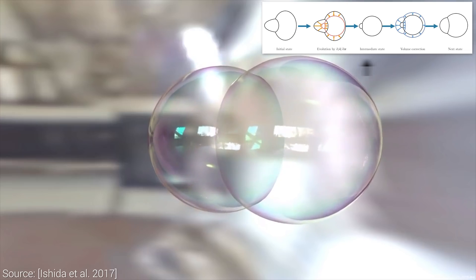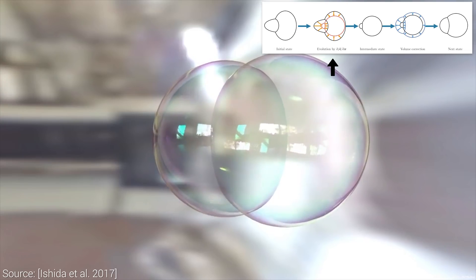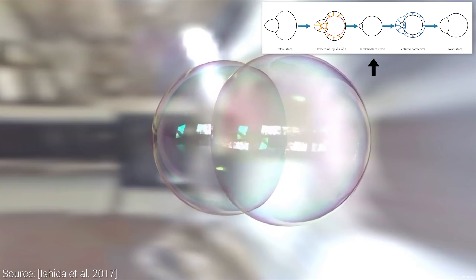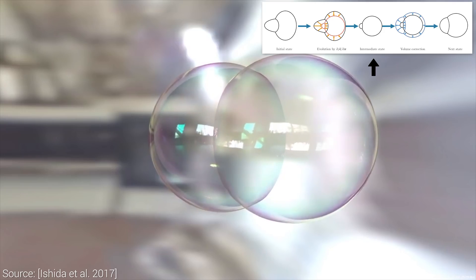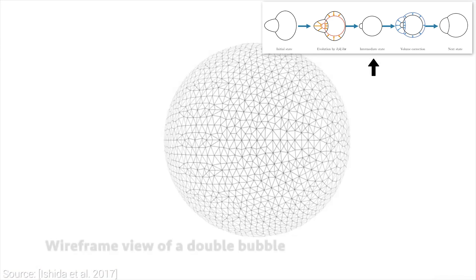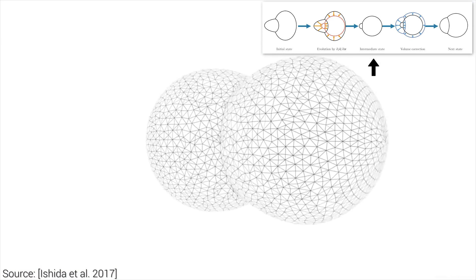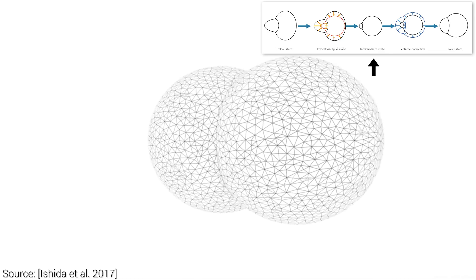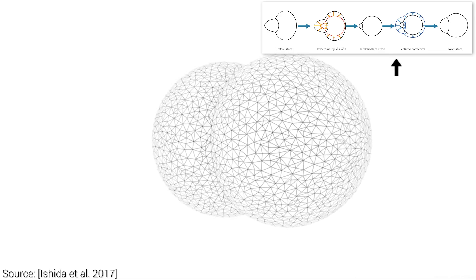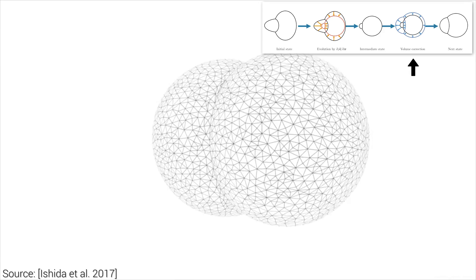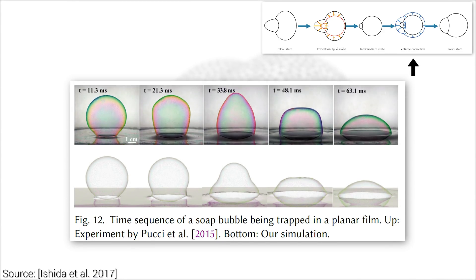So this shall be the first step. We simulate forces that create the appropriate shape changes and proceed into an intermediate state. However, by pushing the film inwards, its volume has decreased. Therefore, this intermediate state is not how it should look in nature. This is to be remedied with a volume correction step. In the validation section, it is shown that the results follow Plateau's laws quite closely.